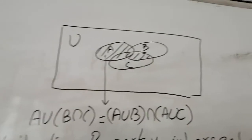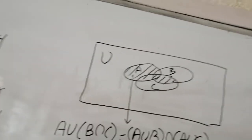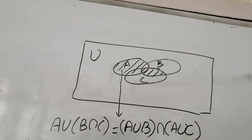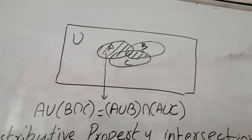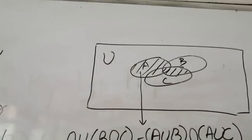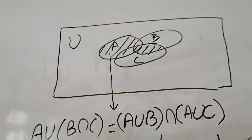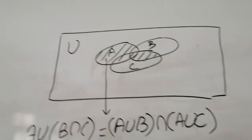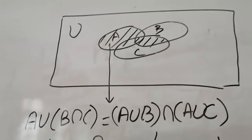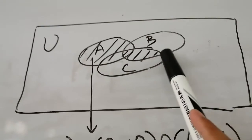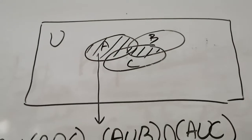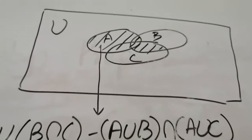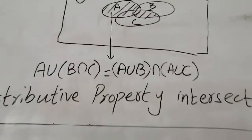We have also represented this using a Venn diagram with three overlapping sets A, B, and C. The B intersection C portion is identified first, and then taking A union with it covers all of A along with the intersection portion. Both sides of the distributive property are shown to match in the Venn diagram.